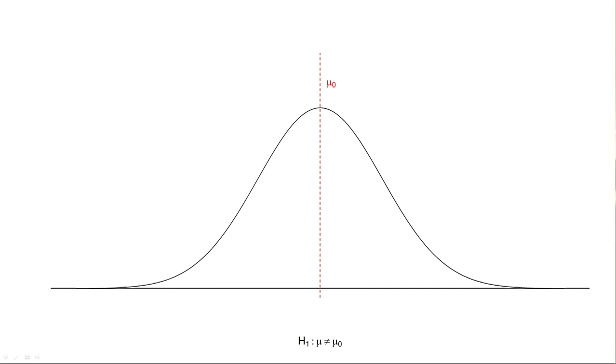Now for the two-tailed test. The alternative mu is not equal to mu naught. Since it's not equal to, we're going to have critical values above and below. How far above and below? Well, so that the shaded area above and below is equal to that alpha value. And that means we're going to split the alpha between that above and below. So we've got alpha over 2 above, alpha over 2 below. Those are the areas, those are the probabilities that we look for in our tables.